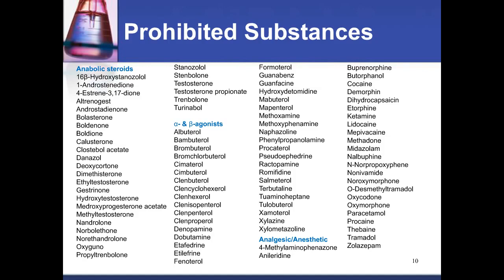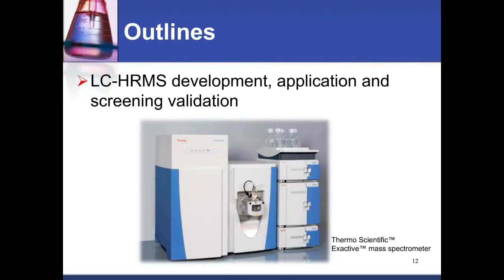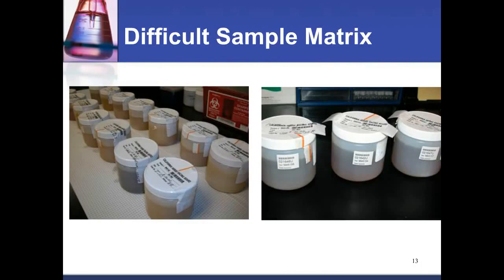Before going into method details, I wanted to show a partial list of the complex compounds we look for — some anabolic steroids, beta and alpha agonists, and analgesic compounds. These represent substantially different analyte variations, some of which are metabolized by the horse into other compounds, making them more difficult to detect. Our target list started at 600 compounds for one analytical method, combining acid-neutral and base fractions from extraction into a single injection in a short analytical run. We selected the Q-Exactive for this analysis and developed it into routine screening through a series of validation steps.